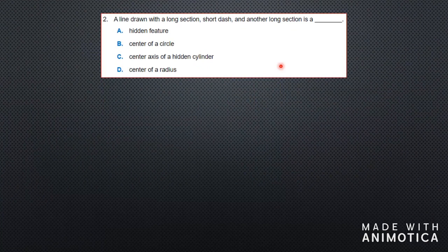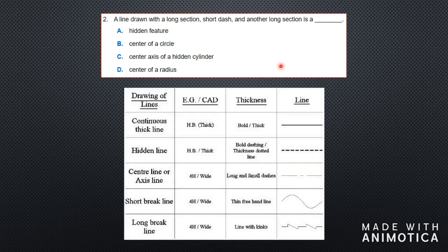Question number two: a line drawn with a long section, short dash, and another long section — is it a hidden feature, center of a circle, center axis of a cylinder, or the center of a radius? Looking at the line chart, what they are asking for is a line that has a long section, a short dash, and another long section. You will see this is the center line or axis line — it has long and small dashes.